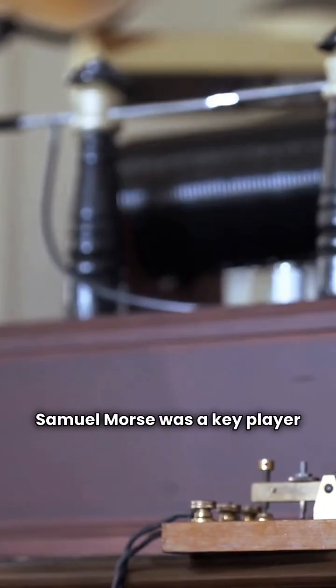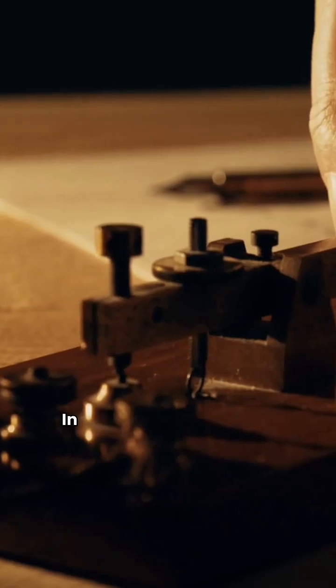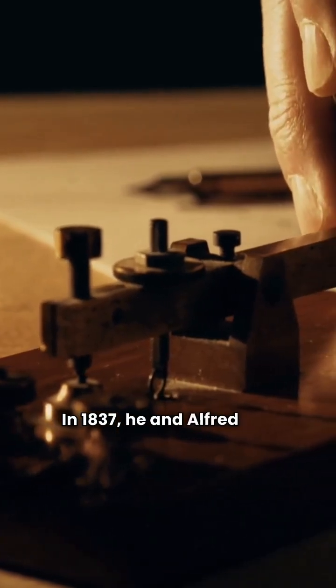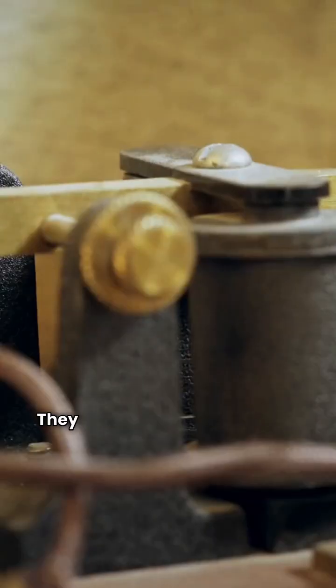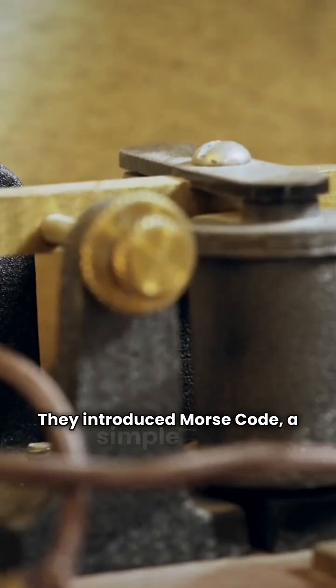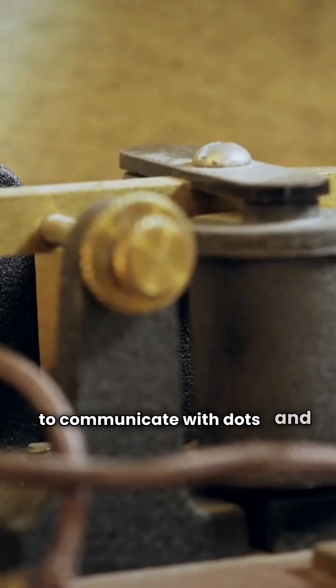Samuel Morse was a key player in this revolution. In 1837, he and Alfred Vail created a telegraph system that sent coded signals over wires. They introduced Morse code, a simple way to communicate with dots and dashes.